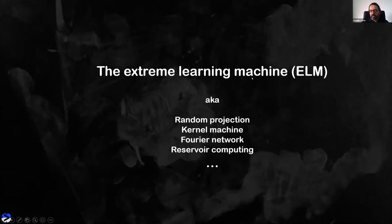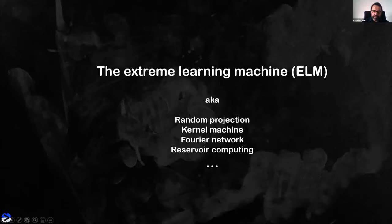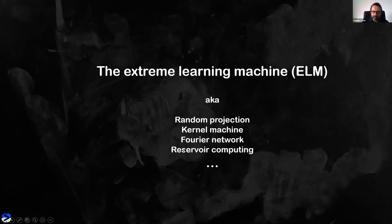The extreme learning machine is a different paradigm from deep neural networks. The name covers similar paradigms including random projection, kernel machines, and reservoir computing — all essentially the same idea. We like the name extreme learning machine, but you can find similar results under different names.